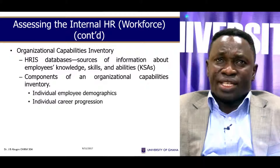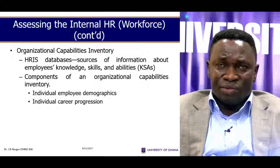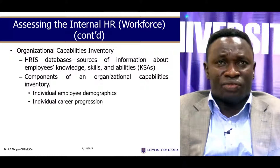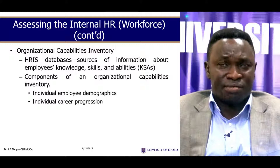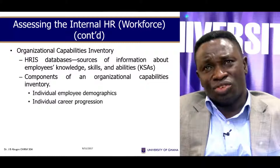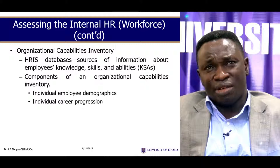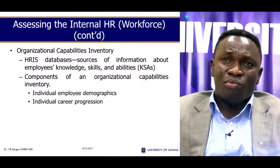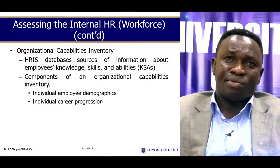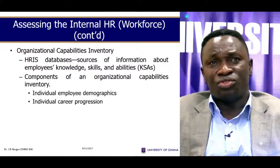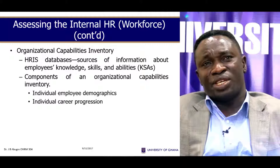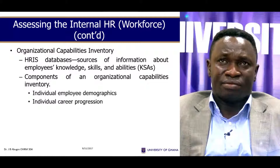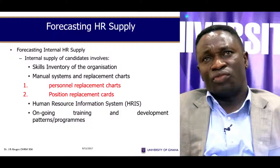We can also ask about organizational capabilities inventory. We use the organizational capability inventory to determine, first, the human resource information system — that is, databases and sources of information about employees' knowledge, skills, and abilities. The components of an organizational capabilities inventory include two things: individual employee demographics and individual career progression.